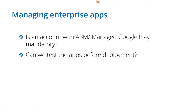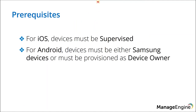Now let me show how to manage your own enterprise application. For enterprise apps, ABM or Managed Google Play is NOT required. You can also test your own apps before deployment, just like you would for computers. Prerequisites: for iOS, the device must be supervised for silent installation. For Android, the device must be either Samsung or provisioned as a Device Owner — a specific enrollment method that gives you full control. You can revisit the previous training video for the Device Owner enrollment procedure.